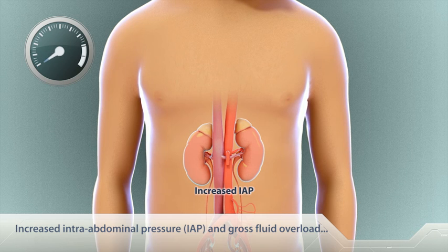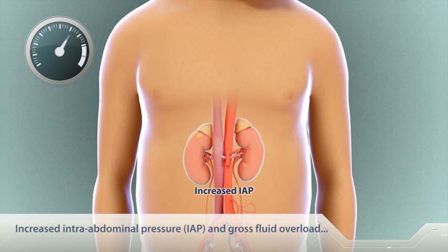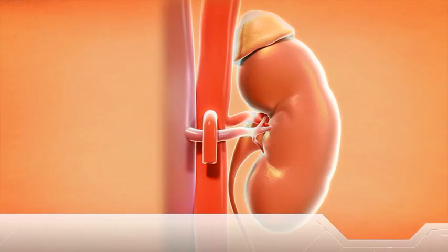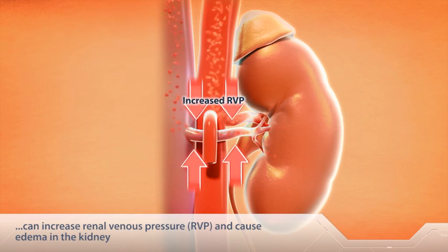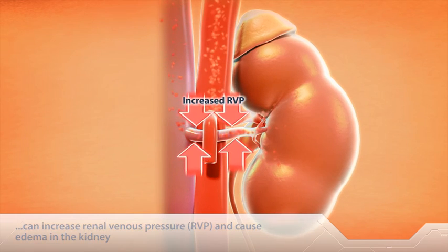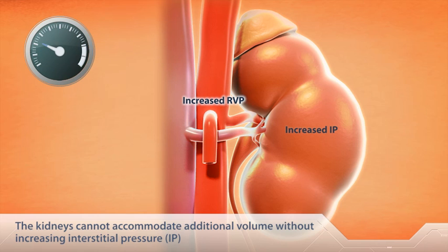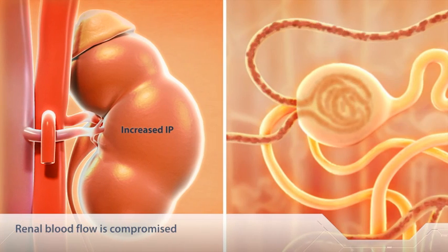An increase in intra-abdominal pressure and gross fluid overload can increase the renal venous pressure and cause edema in the kidney. The kidneys cannot accommodate this additional volume without increasing interstitial pressure. As a result, renal blood flow is compromised.